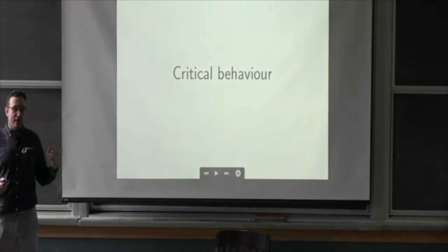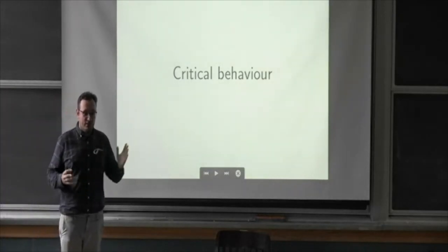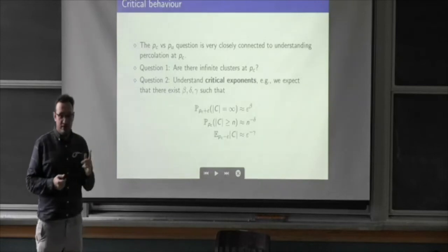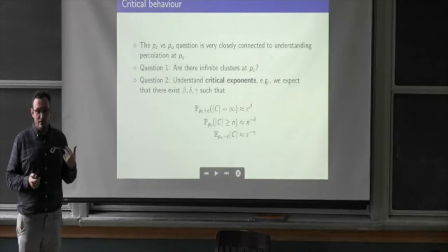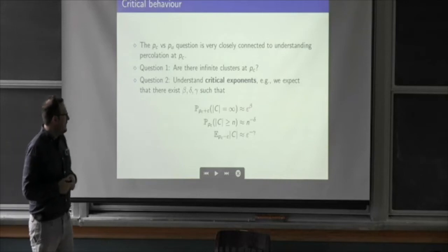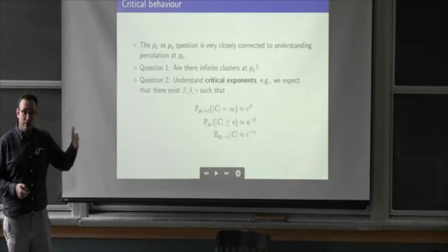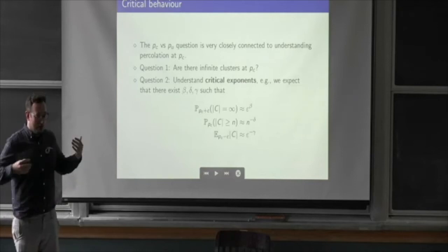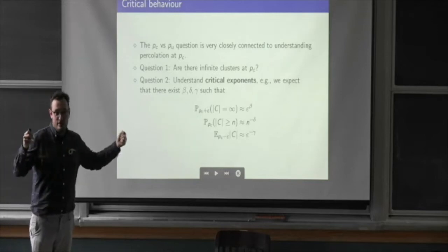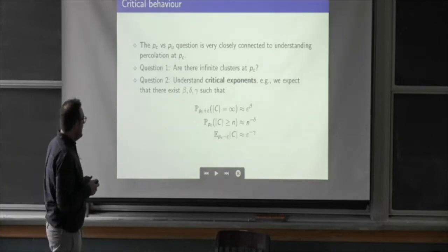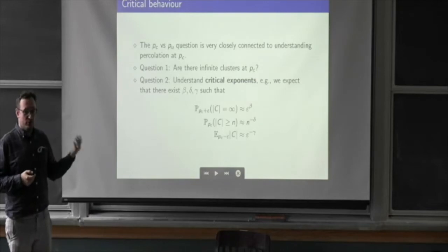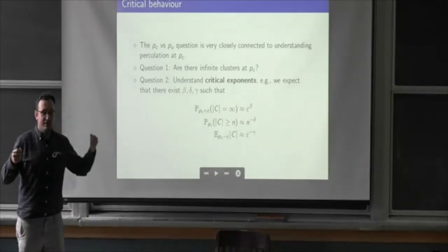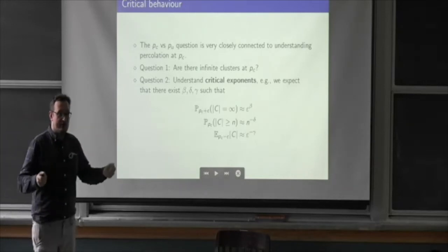I want to step back and look at the other question about understanding critical behavior, and we'll see these two questions go hand-in-hand. The first qualitative question is: do you have infinite clusters at criticality or not? We believe in great generality you do not have infinite clusters at criticality, and moreover we'd like to understand the distribution of finite clusters at criticality. One of the most important ways for understanding this is through critical exponents: at criticality, probabilities of clusters being large should have power law decays, and quantities near criticality should blow up or decay like powers of how close you are to PC.